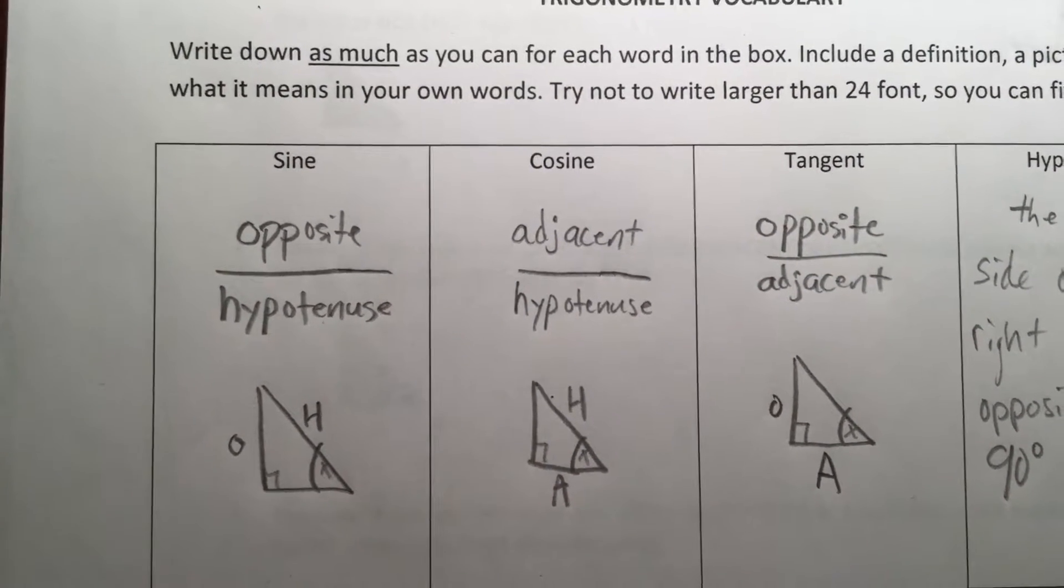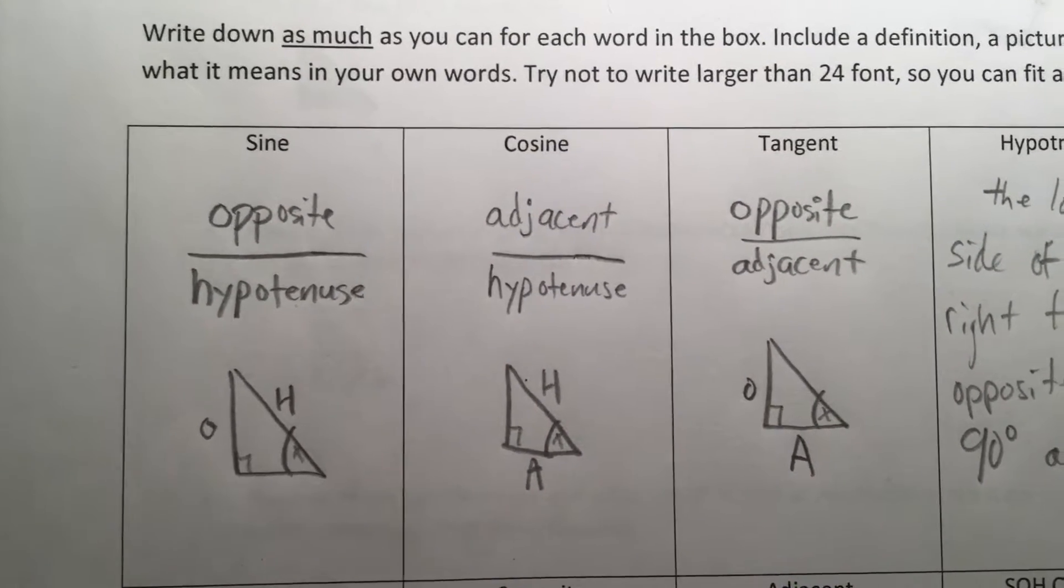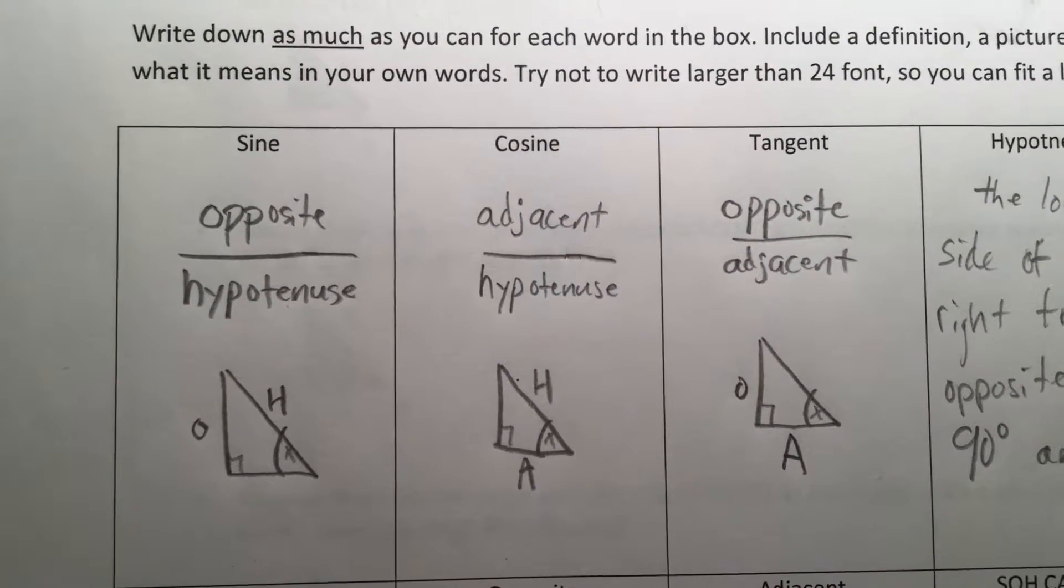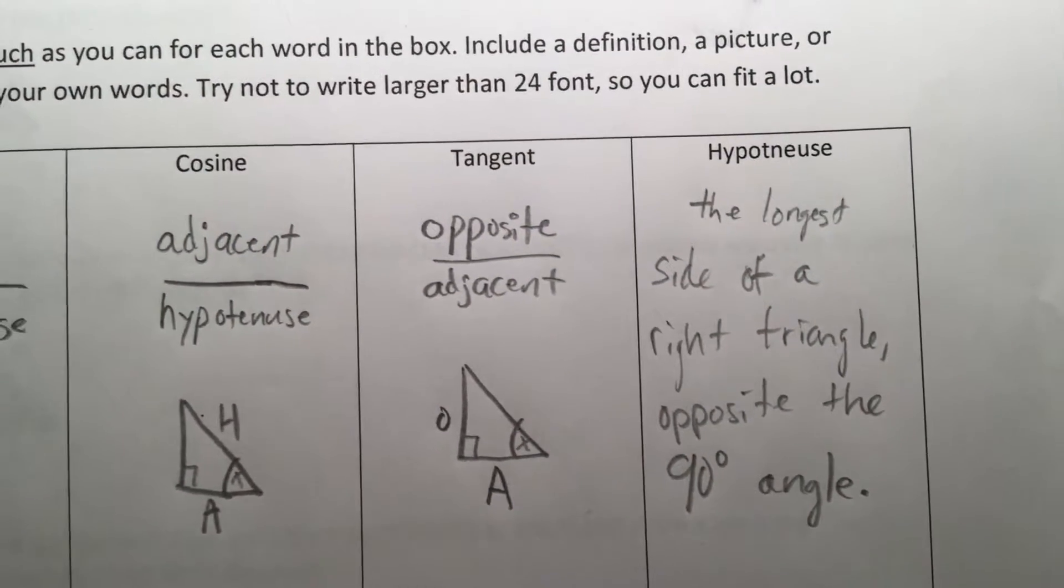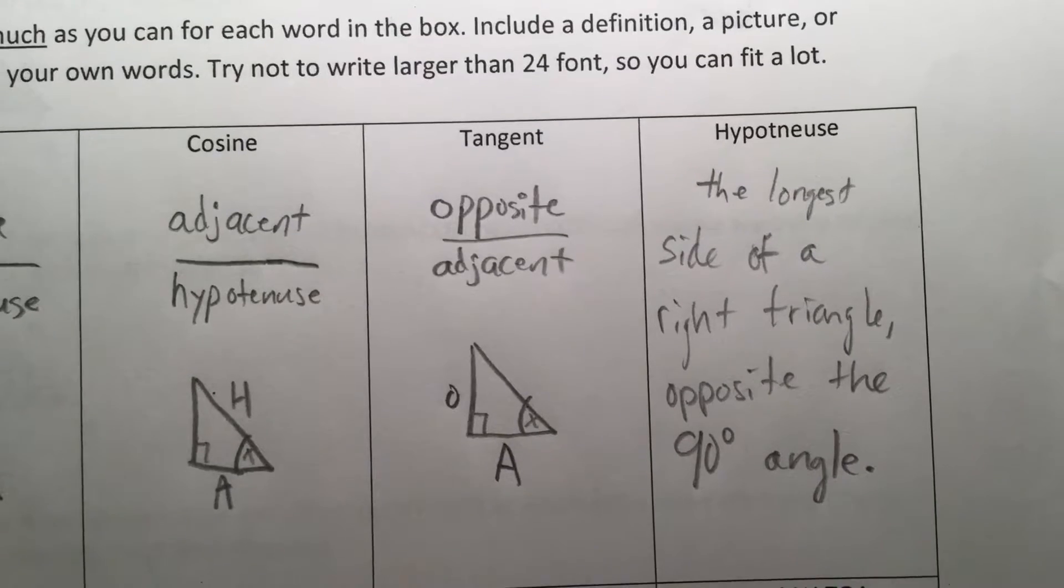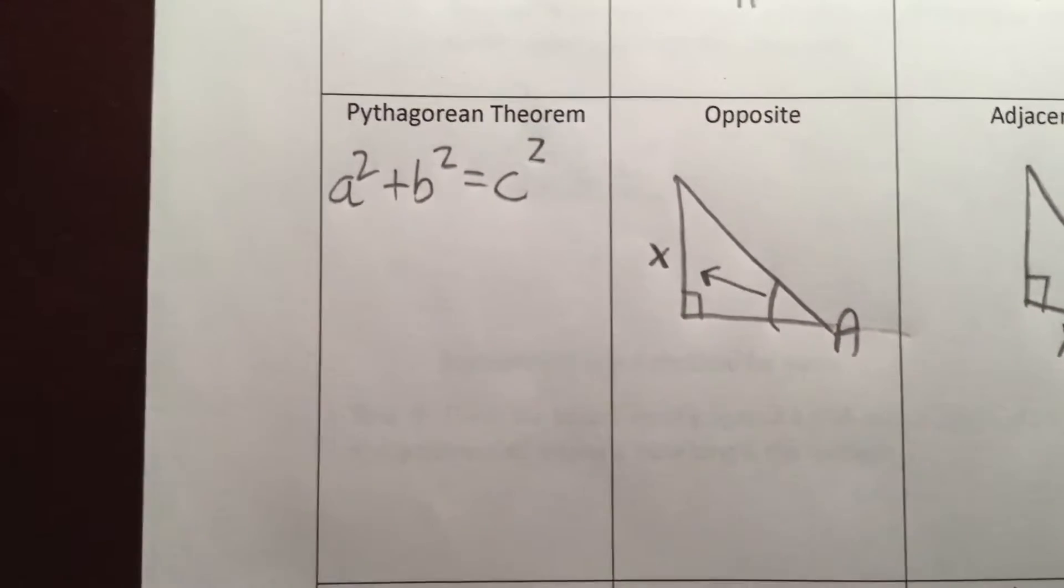The tangent is the length of the opposite side divided by the adjacent. The hypotenuse is the longest side of a right triangle, opposite the 90 degree angle, as described by the Pythagorean theorem.